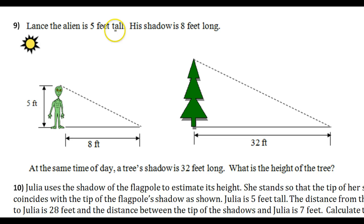Lance the alien is five feet tall and then we have this tree. If you measure the height of various objects and look at their shadows, the shadows are all being cast by the same Sun. So similar triangles will always be created if you create the triangles using the figure and its shadow.